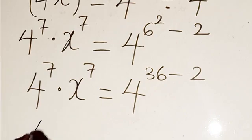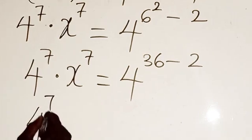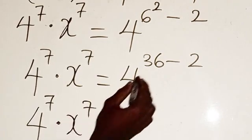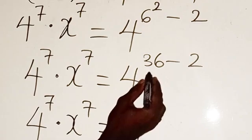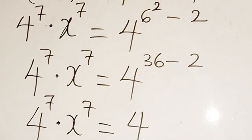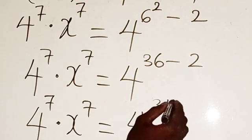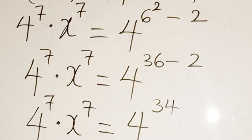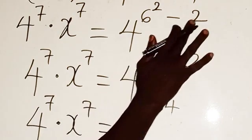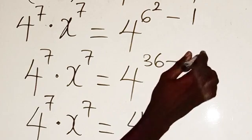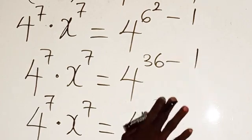So now from there, the next thing we are going to do, I have 4 to the power of 7 multiplied by x to the power of 7 equals—here I can have 4 to the power of 6 minus 2, that's going to give me 34. So now from there, sorry, this is 1 not minus 2. I'm very sorry for that. And this one is going to give me 35.